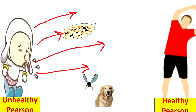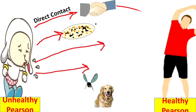Let us see how communicable diseases are spread. First is direct contact — for example, if a person is suffering from COVID-19 and a healthy person has direct contact with the infected person, like a handshake, then the healthy person will also be affected. Next, diseases spread by air: germs that cause diseases like chicken pox, whooping cough, diphtheria, influenza, and scarlet fever are present in discharge from the nose and mouth of a patient and can spread through sneezing or coughing.